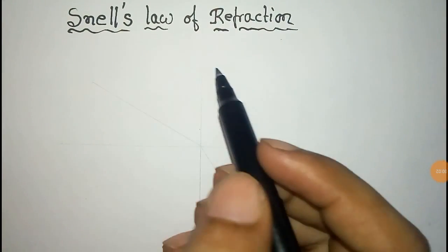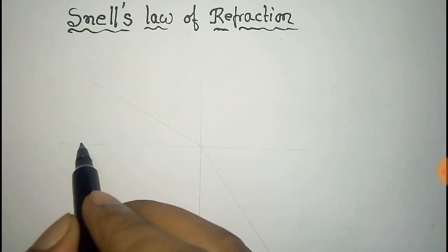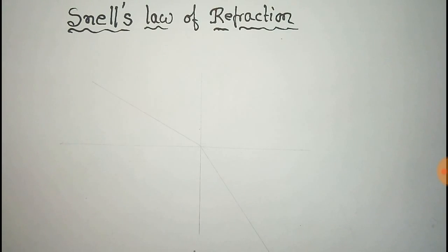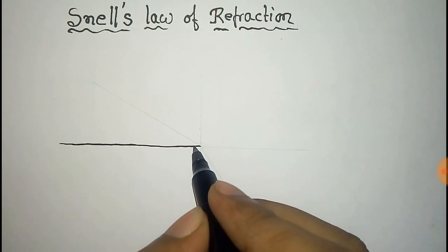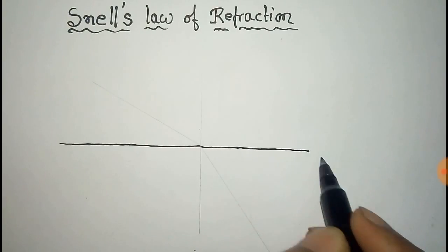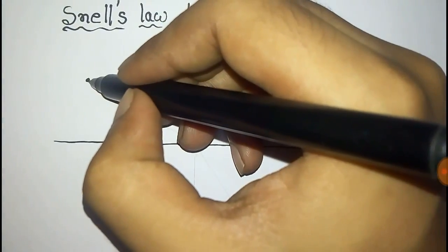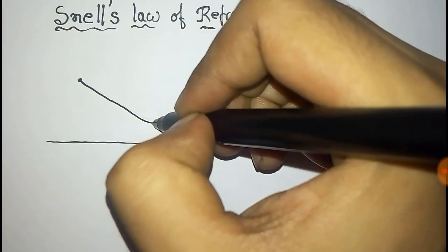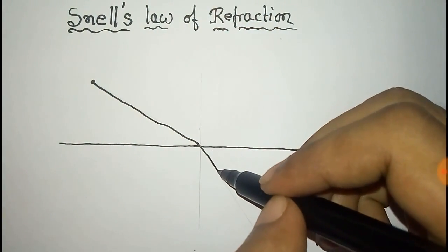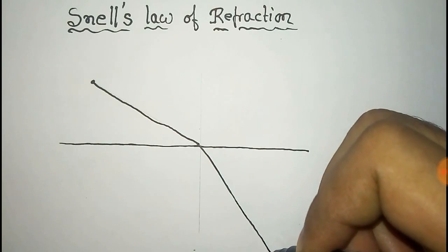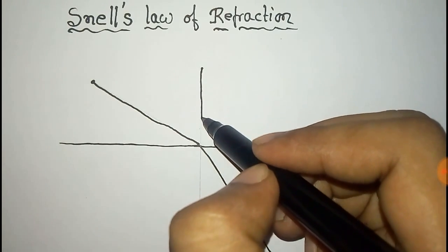We have to prove Snell's law of refraction from Fermat's principle. For this purpose we first take a refracting surface and a source of light. Light comes from the source and after refraction it goes to another direction, and this is the normal to the surface.